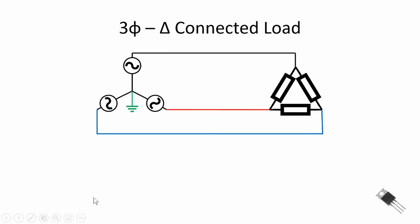We can also have delta-connected loads. In a delta-connected load we look from line to line — for example, A to B — which is called a line-to-line voltage. Go back and review your motors or machines class where you learned polyphase voltage. This is 208 volts RMS, and referencing our line-to-neutral phase angle, it's at a phase angle of 30 degrees relative to our A line-to-neutral. We can also have B-to-C and C-to-A line voltages across a delta-connected load.